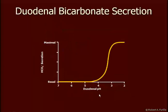As duodenal pH falls, there is a basal level of bicarbonate secretion until we reach about pH 4.5. At approximately pH 4.5, bicarbonate secretion begins to rise increasingly fast until we reach about pH 3, at which point we are at near-maximal bicarbonate secretion. At pH lower than 3, we see no further increase in bicarbonate secretion.